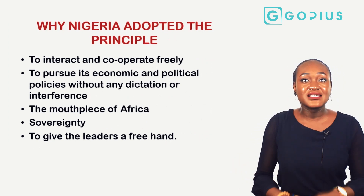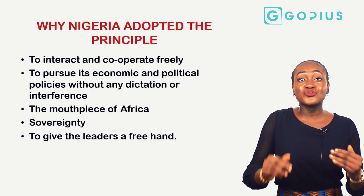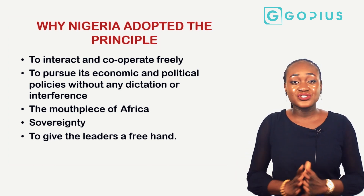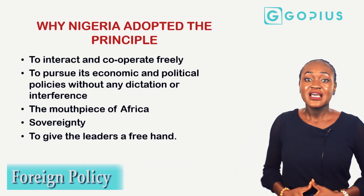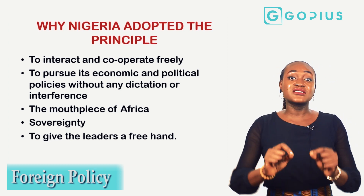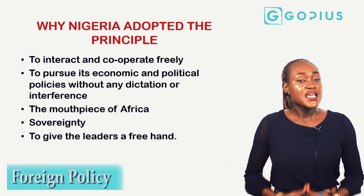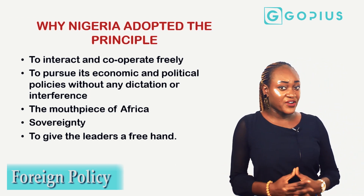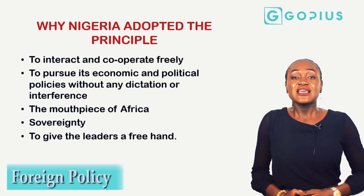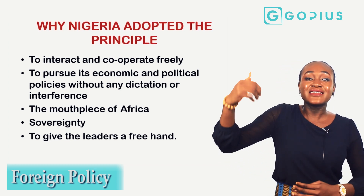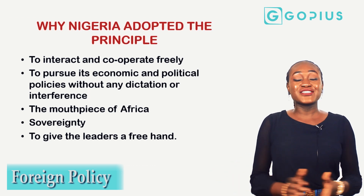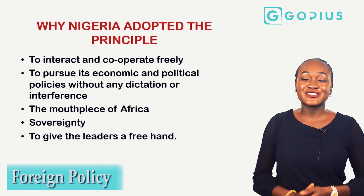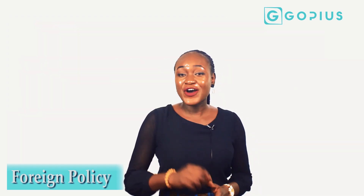Nigeria adopted non-alignment to interact and cooperate freely without interference, taking decisions with an objective mind. It also allows pursuit of economic and political policies without any form of dictation. Since Nigeria is the mouthpiece of Africa, aligning with one bloc may not be convenient for other sister states. Non-alignment also respects the sovereignty of African states and allows their leaders a free hand.